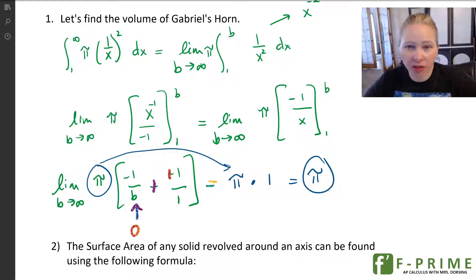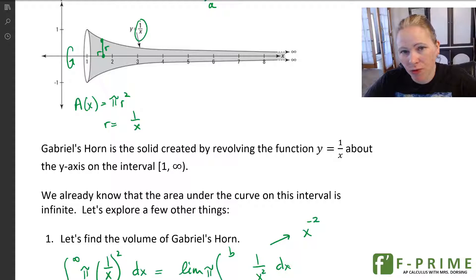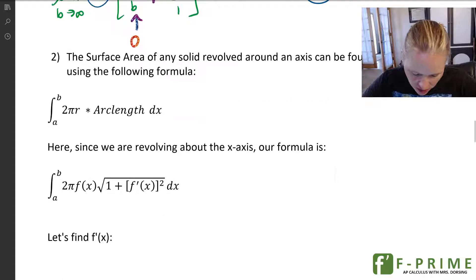So we know that the volume exists. Spoilers, I told you that it was going to converge, and it converges to π. But now let's talk about the surface area. So the surface area would be the wrapper, right? So if I were to put a wrapper around this, what would the area of that wrapper be?